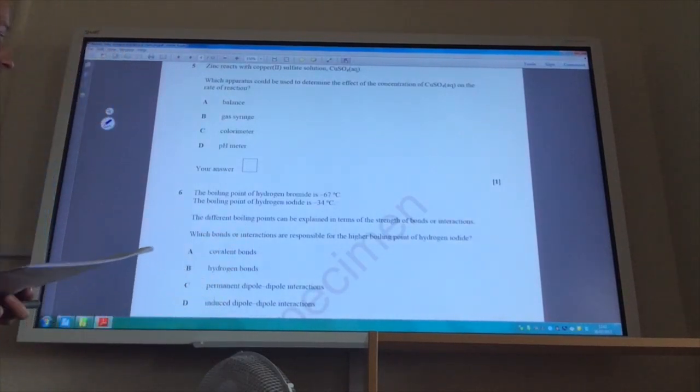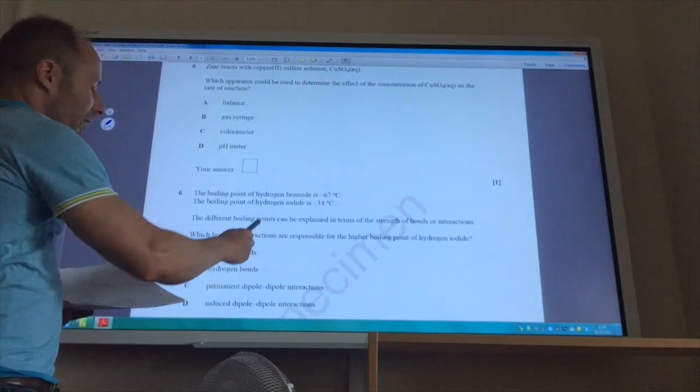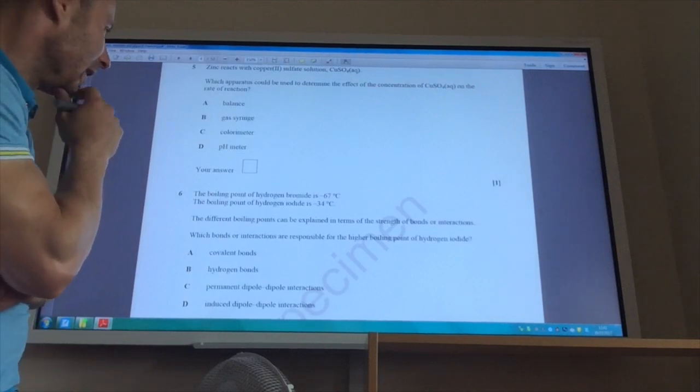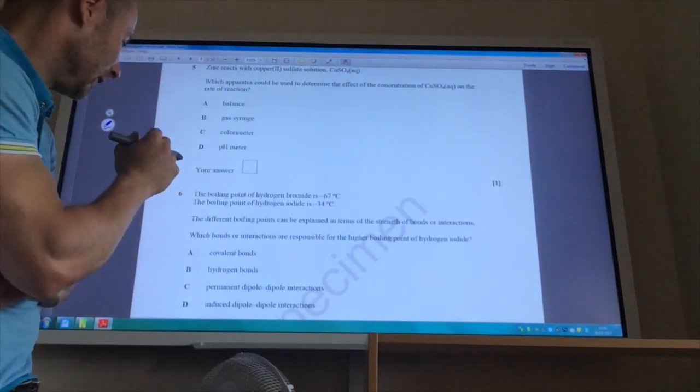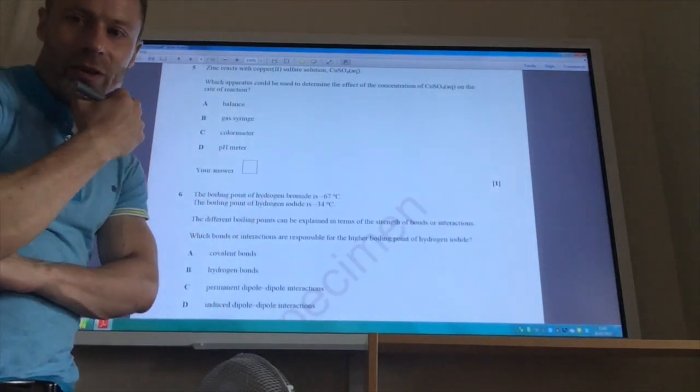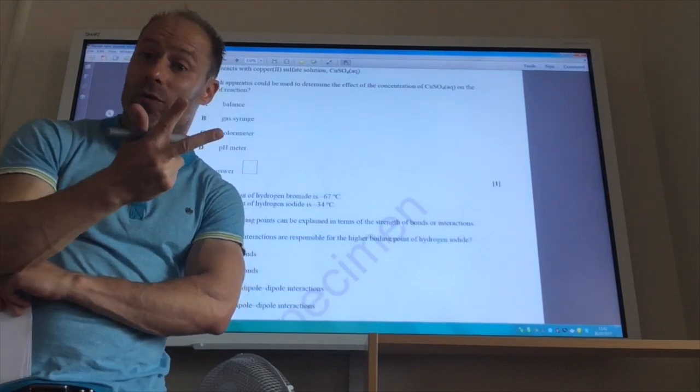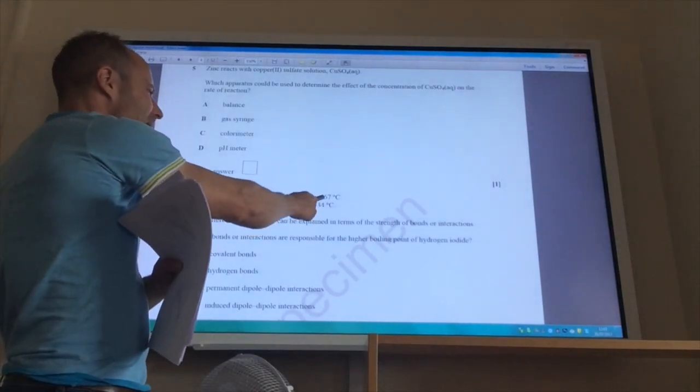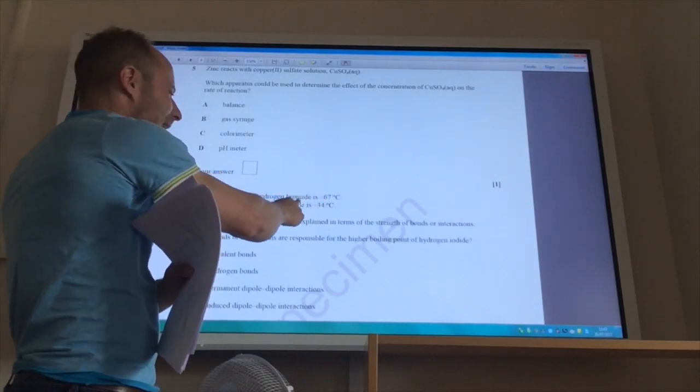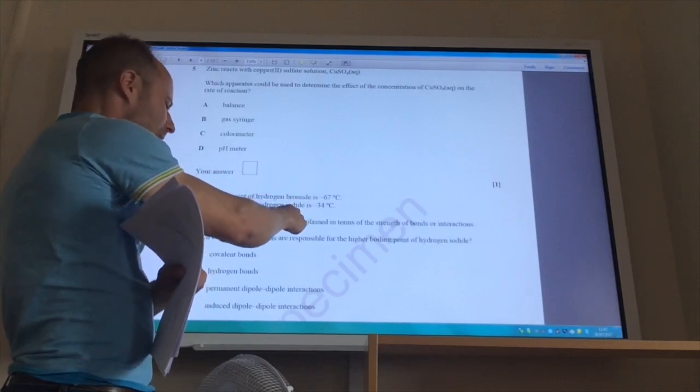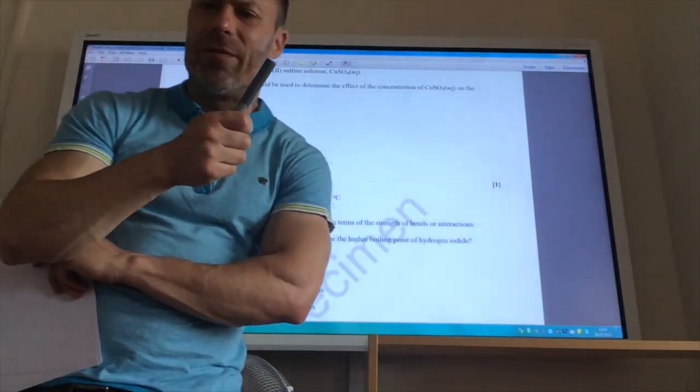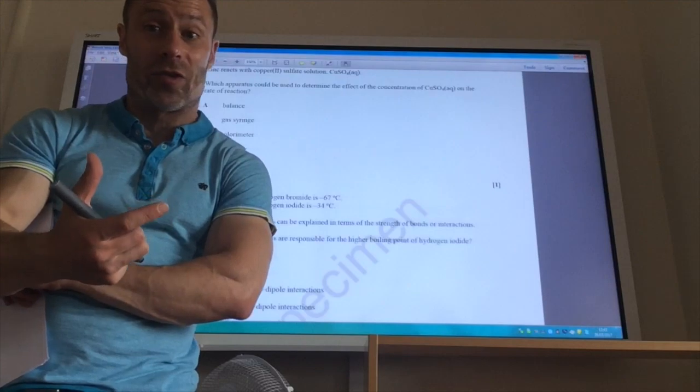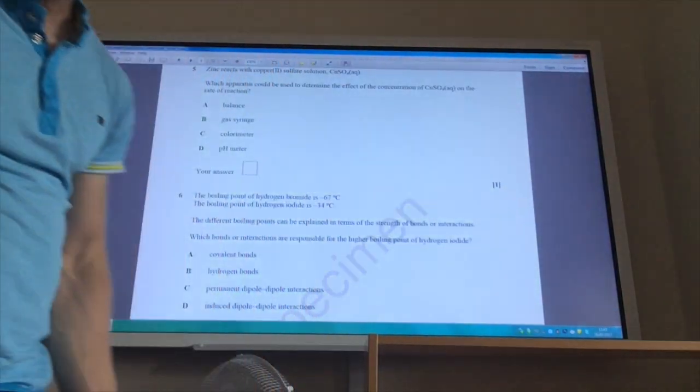Let's whizz on then to question six. A boiling point of hydrogen bromide is minus 67 and of hydrogen iodide is minus 34. This could be explained in some strengths of bonds or interactions. Covalent bonds? No way. Covalent bonds are not broken during boiling. Hydrogen bonds, neither of these guys are going to have hydrogen bonds. Because for hydrogen bonds, your hydrogen atom is attached to an oxygen and nitrogen or fluorine atom. Permanent dipole-dipole interactions. Well, that doesn't explain it because the boiling point of hydrogen iodide is higher than hydrogen bromide. And yet, bromine is more electronegative than iodine. So if that was the explanation, it would be the other way round. Induced dipole-dipole, that's the one we're looking for because of course, induced dipole-dipole depends on the number of electrons that you've got in your molecule. And hydrogen iodide will have a lot more electrons than hydrogen bromide because iodine have more electrons. So the answer is D.